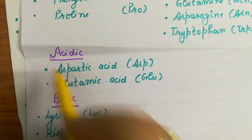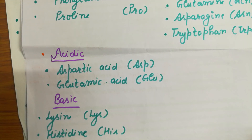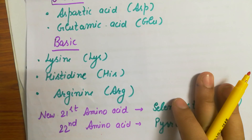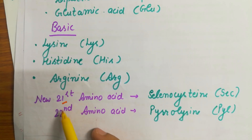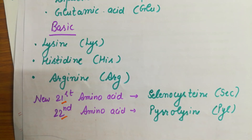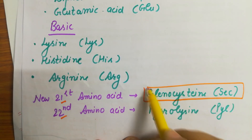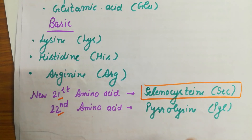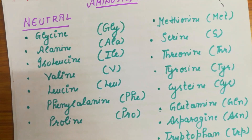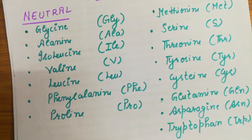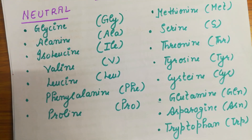The two acidic amino acids are aspartic acid and glutamic acid. The three basic amino acids are lysine, histidine, and arginine. These were the initial 20 amino acids, but recent research has found two more amino acids that play a role in protein synthesis: the 21st is selenocysteine and the 22nd is pyrrolysine. You need to remember these amino acids as they are fundamental to protein synthesis. Tomorrow we are going to discuss proteins in detail.